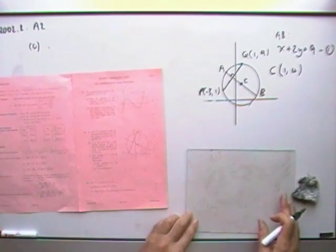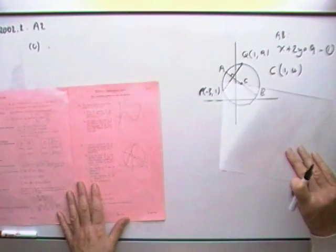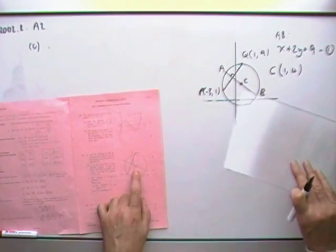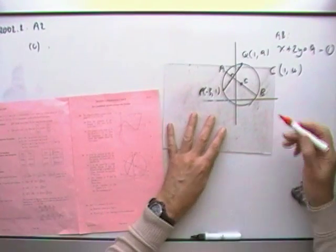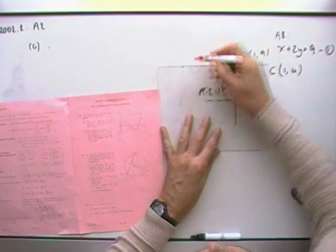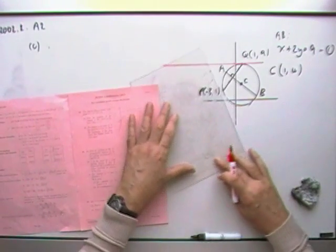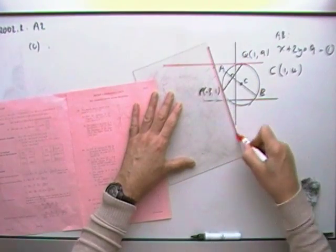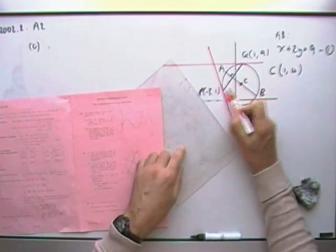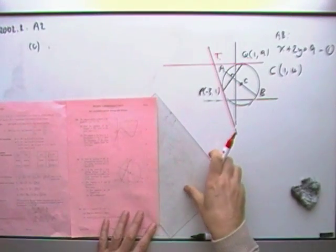Now for part c, the tangents at p and q intersect at t. Well, the tangent at q is easy because if that's a vertical line, that's the top of the circle, so its tangent is going to be a horizontal line. And the tangent at p is going to look something like this, at right angles to the radius. And so that's the point t that they're looking for.